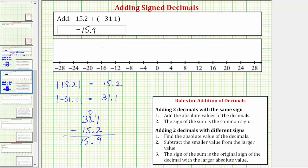Now let's also show the sum on the number line. So to model 15.2, we start at zero and move right 15.2 units to positive 15.2.